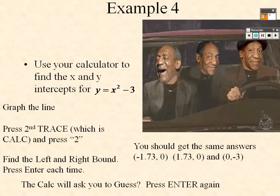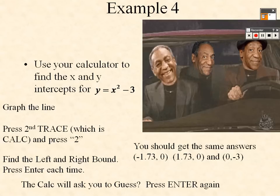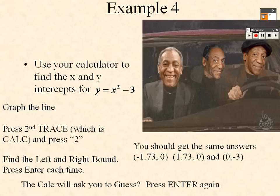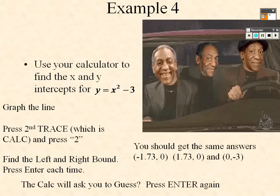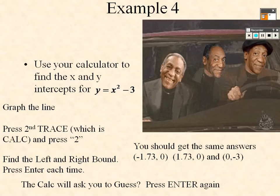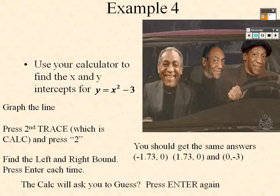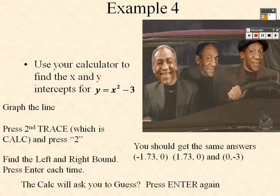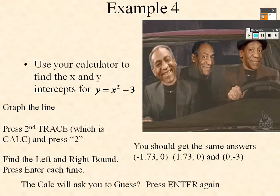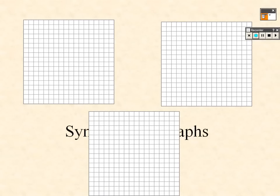Press Second Trace one more time and go down to zero to find where the graph crosses the y-axis. Make a rough guess about where it crosses, select a point on the left and right of it, press Guess, and you'll find the y-intercept value.